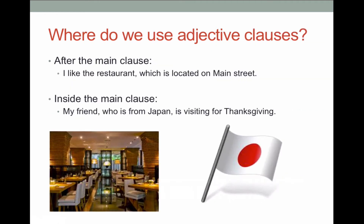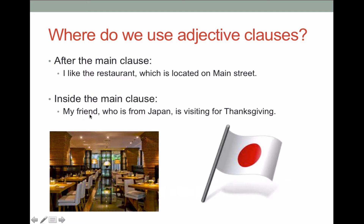So where do we use adjective clauses? There are two places. After the main clause — for example, 'I like the restaurant, which is located on Main Street.' Here's my main clause, and then here's my adjective clause. Or I can do it inside the main clause: 'My friend, who is from Japan, is visiting for Thanksgiving.' 'My friend is visiting for Thanksgiving' is my main clause, and the adjective clause is sitting inside of it.